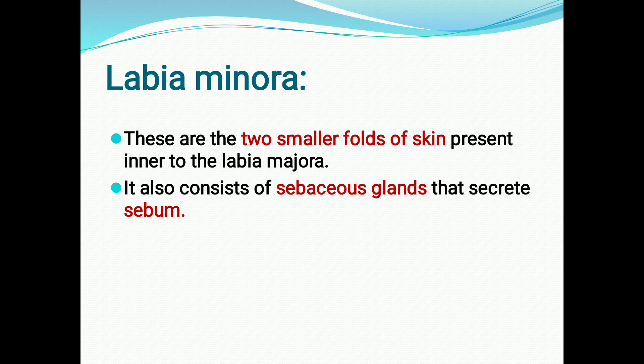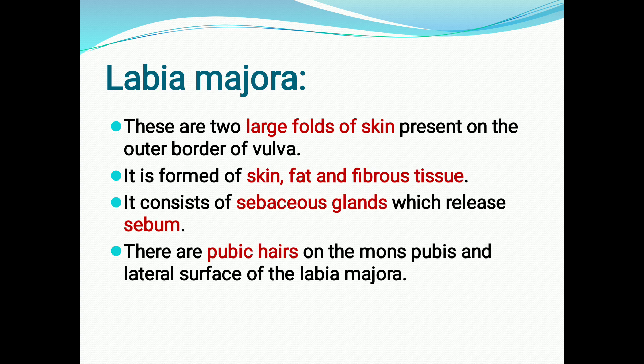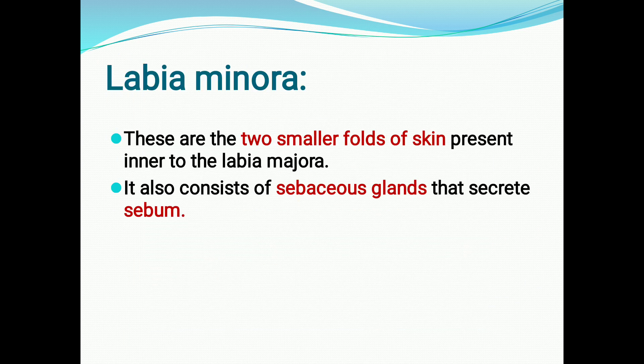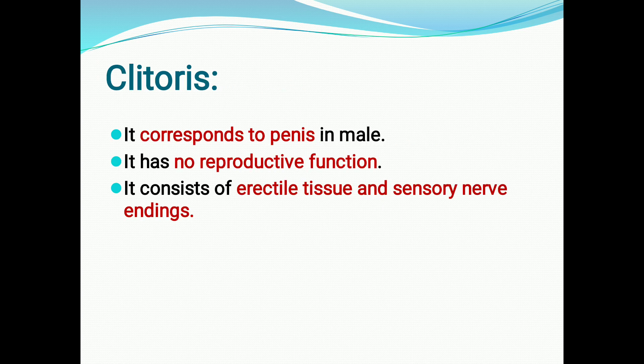Labia minora are the two smaller folds of skin present inner to the labia majora. They also contain sebaceous glands, which secrete sebum and help in lubricating the vulva.